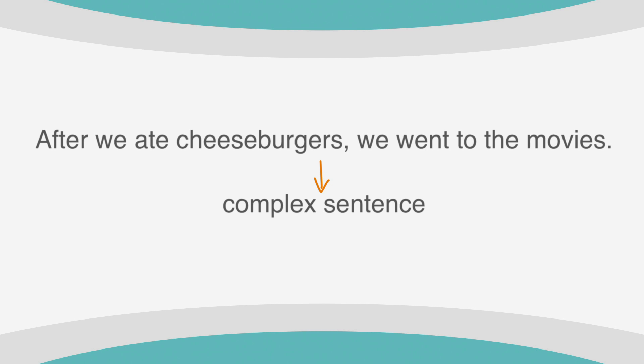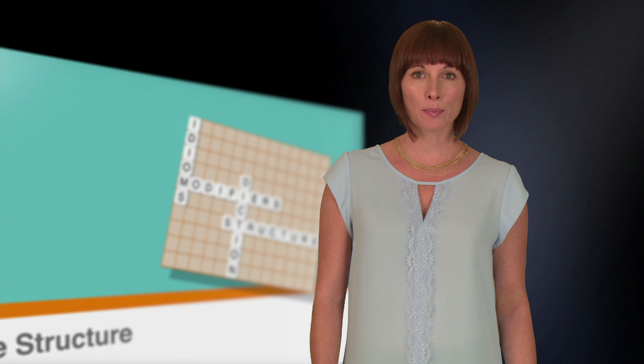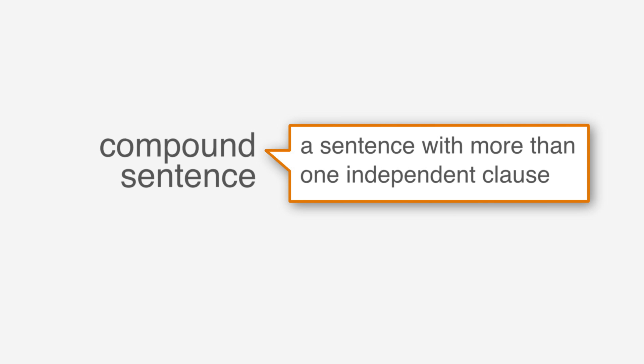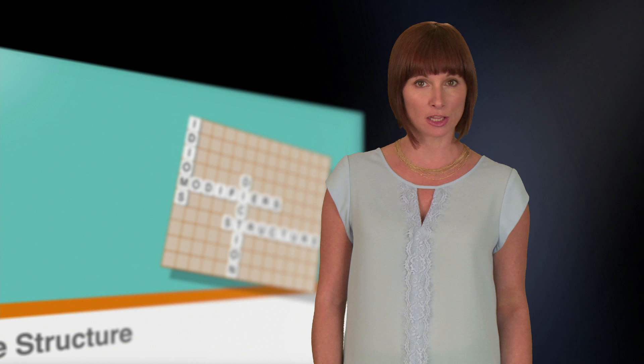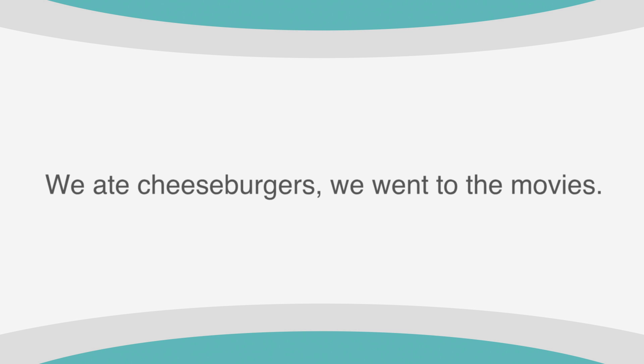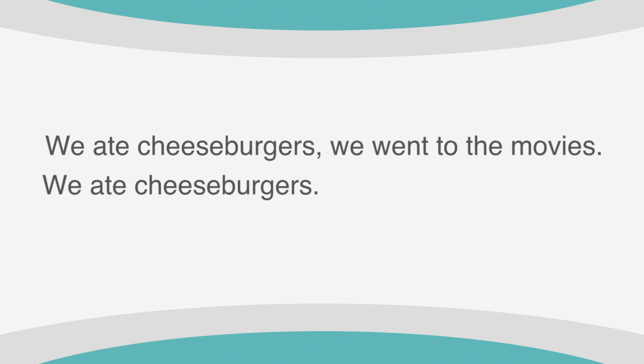Now let's look at compound sentences. A compound sentence is a sentence with more than one independent clause. We end up with a run-on sentence any time we have two independent clauses joined only by a comma. If our sentence read, 'we ate cheeseburgers, we went to the movies,' it would be a run-on sentence. We could say each independently, but if we want to put them together in one sentence, we have to use FANBOYS.